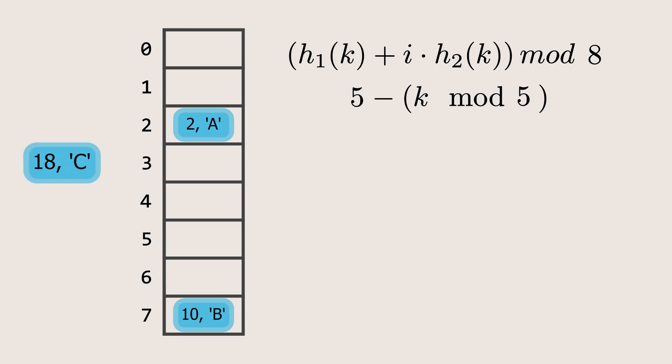Next, in one last example, let's insert a value with the key 18. The hash output is 2, so it should go to index 2. But since index 2 is already occupied, we calculate the second hash function using the key 18. The output is 2. Now, using the formula with the first hash value 2, i equals 1, and the second hash output 2, we get 4. We check if index 4 is empty. It is, so we insert the value there. That's how double hashing works.